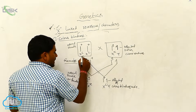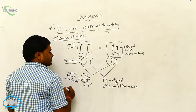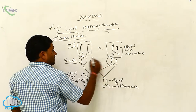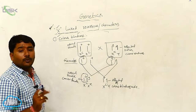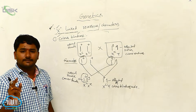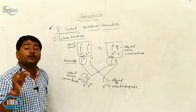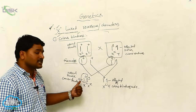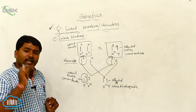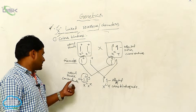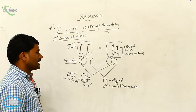When these two gametes combine, one recessive allele and one normal allele — one recessive allele. Mother only exhibits characters when they are homozygous. When two recessive alleles are present, then only they are affected. If only one allele is recessive, they are called as carrier.